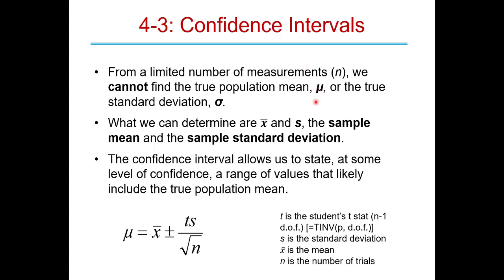We say the true population mean is pretty close to the average value x-bar, and we give a plus-or-minus uncertainty. There's a 95% chance — our chosen confidence level — that the true value is within this range of the calculated average. The only assumption is that the only kind of error is random error. This uncertainty beside the plus-or-minus is the confidence interval.